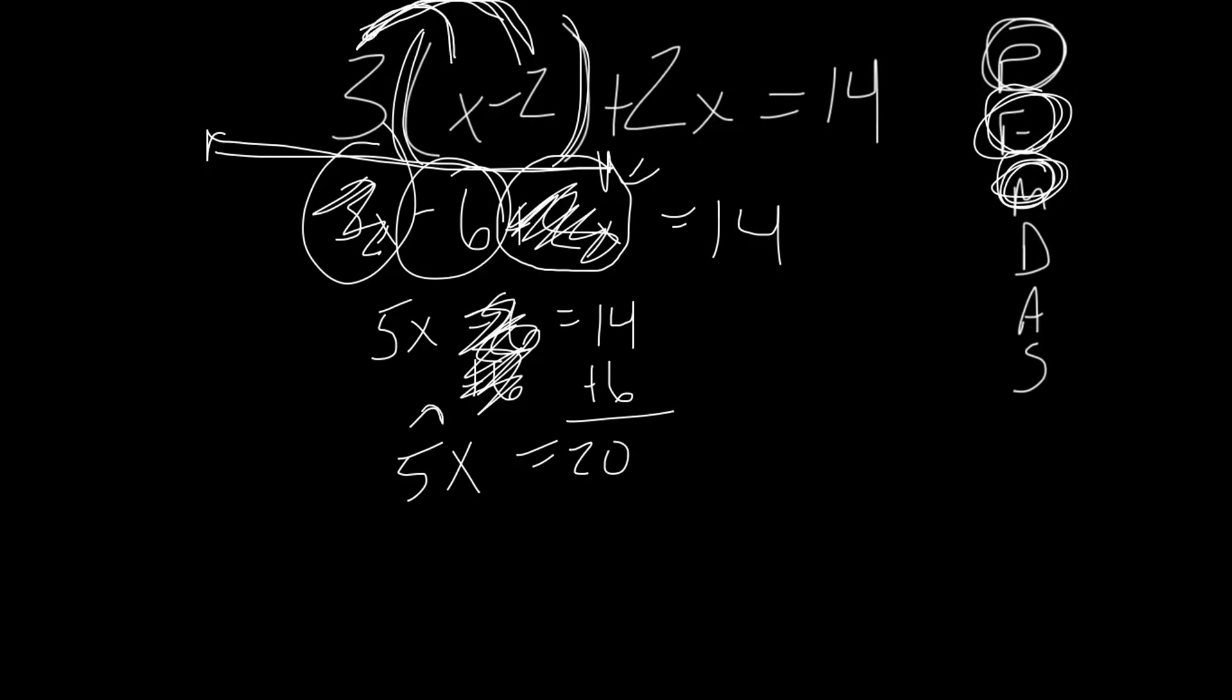What's the opposite of 5 times x? It'll be dividing by 5 and x would equal 4. And you're done.